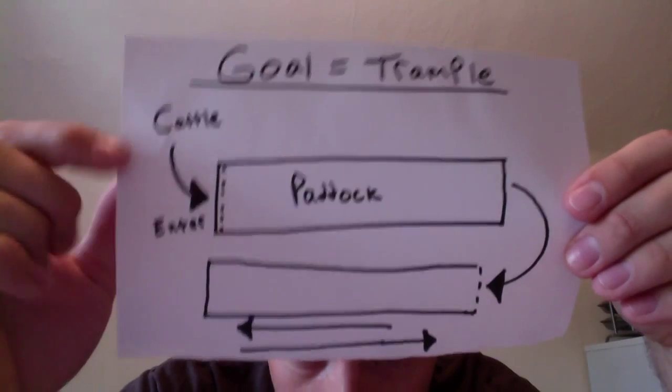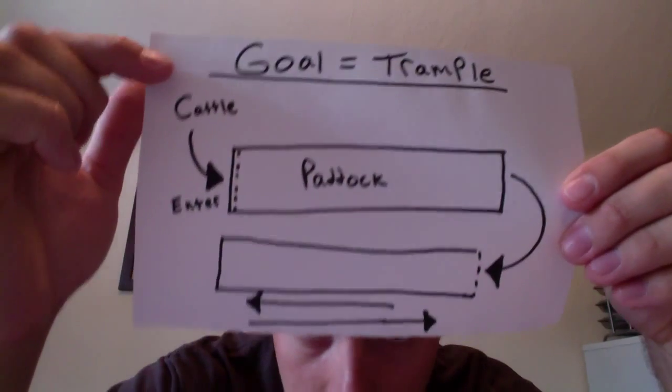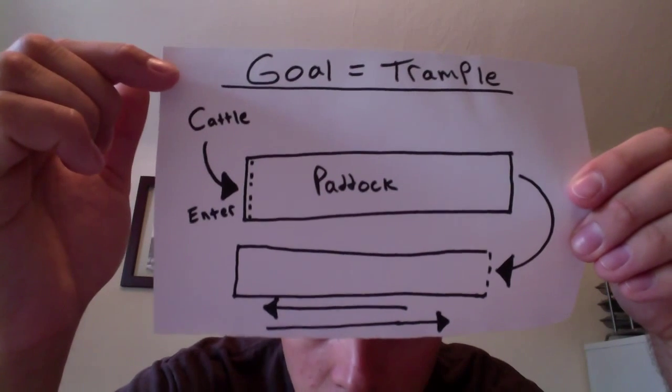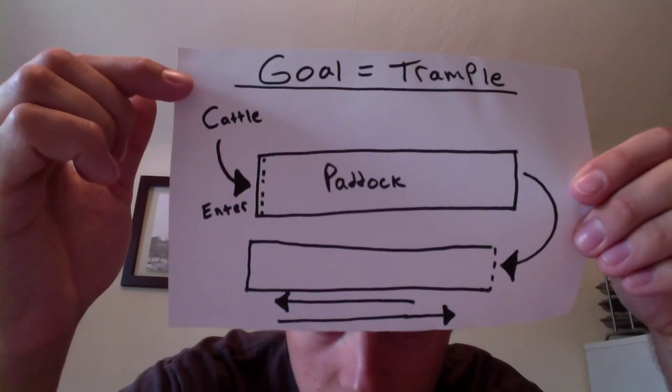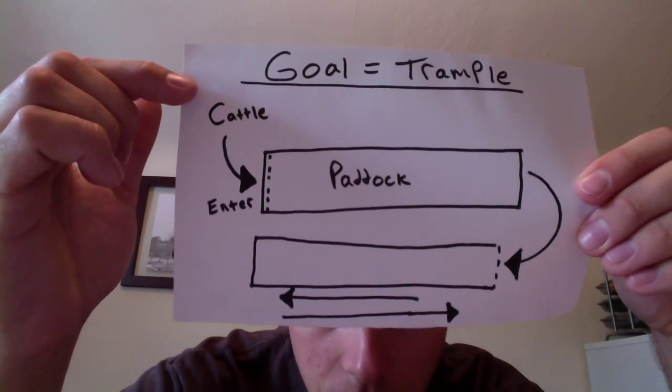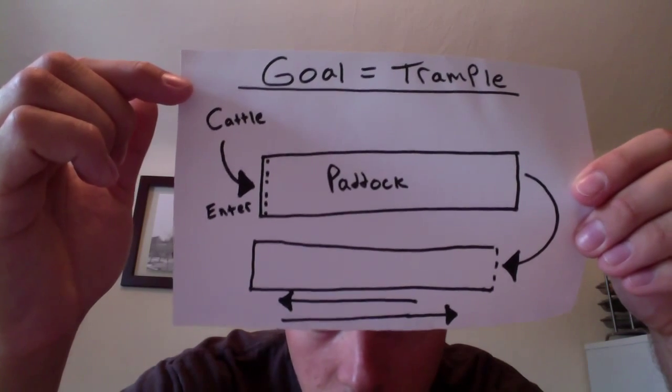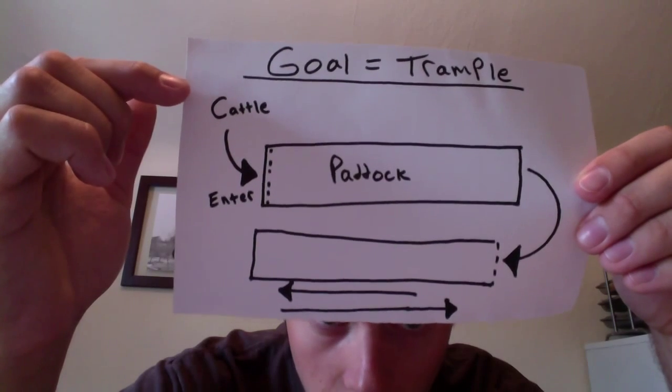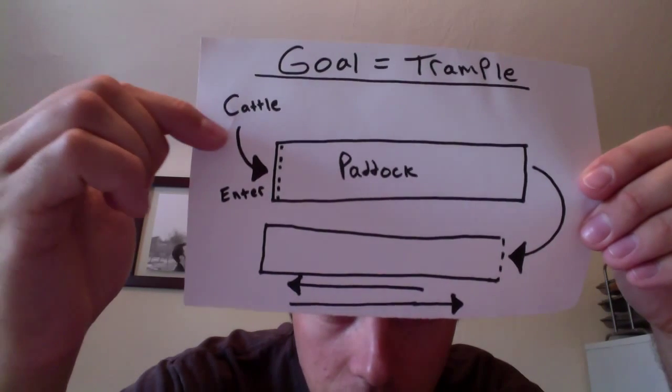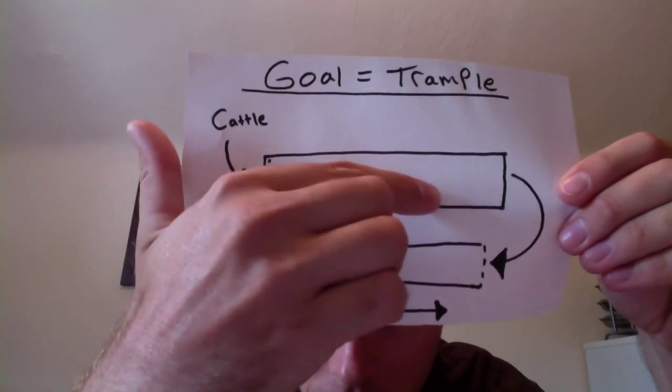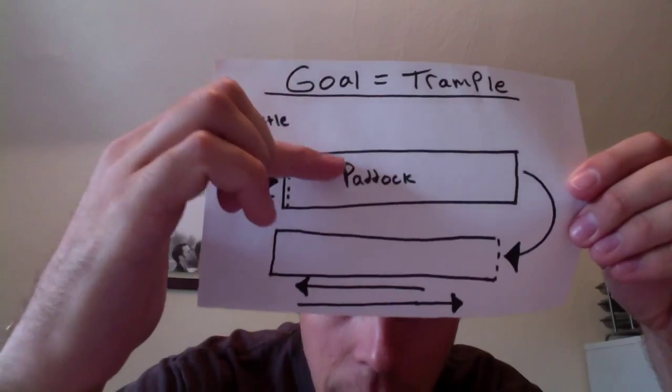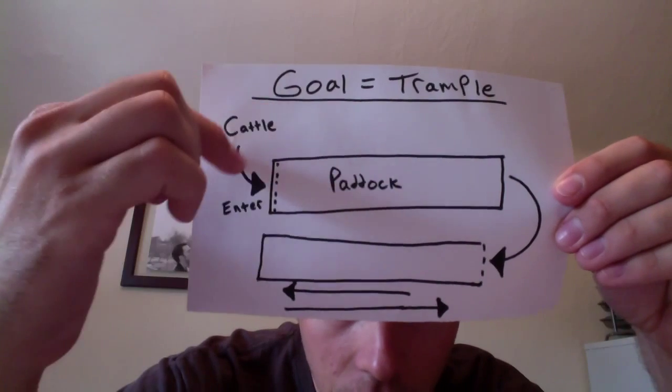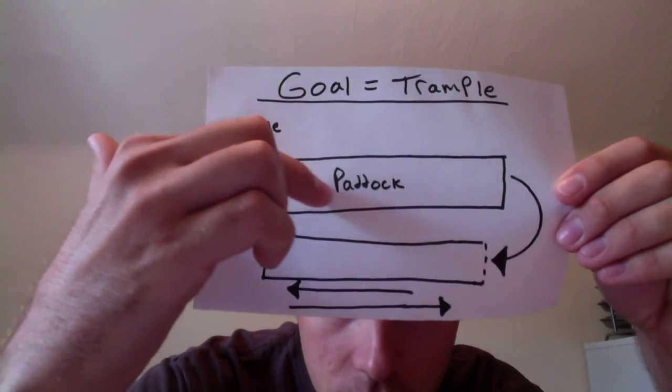The goal is to trample as much grass onto the ground. Now, we want to trample grass onto the ground to feed the soil life and to keep the soil covered. This is how you build organic matter in your soils. If that is our goal, the cattle are going to enter the paddock in this direction. Before, in the last paper, they were coming down. Now, cattle are going to enter in this direction here.